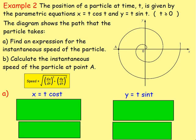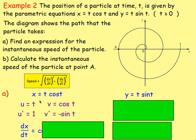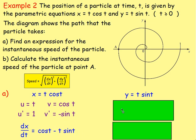To find the speed we need dx/dt and dy/dt. For x = t·cos(t), we use the product rule since we have two functions of t multiplied together. Let u = t and v = cos(t), so u' = 1 and v' = −sin(t). Therefore dx/dt = u'v + uv' = cos(t) + t·(−sin(t)) = cos(t) − t·sin(t).